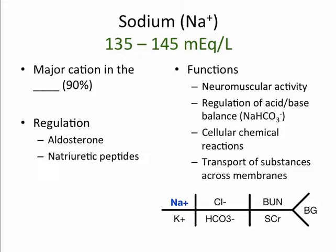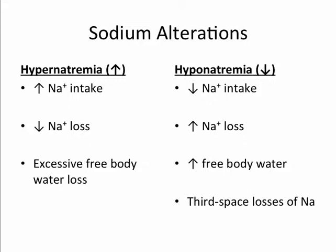Sodium can be increased with increased sodium intake, decreased sodium loss as with Cushing's disease or hyperaldosteronism, or excessive free body water loss as with diabetes insipidus, diaphoresis, and burns. An individual's sodium can be low with inadequate intake, increased sodium loss as with diarrhea, emesis, and diuretics, an increase in free body water as with congestive heart failure, SIADH, or excessive water intake, and also with third-space losses of sodium as with ascites, peripheral edema, and pleural effusion.